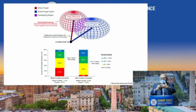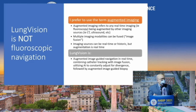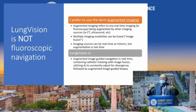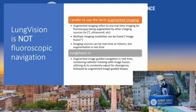Let's segue into Lung Vision. I prefer the term augmented imaging — it's not really fluoro nav. Augmented imaging refers to any real-time imaging being augmented by some other imaging source: fluoroscopy augmented by CT, fluoroscopy augmented by ultrasound, whatever. The important thing is the sources are being fused in real time. Lung Vision is an augmented image-guided navigation that happens in real time, combining catheter tracking with image fusion, utilizing AI to adjust for divergence.